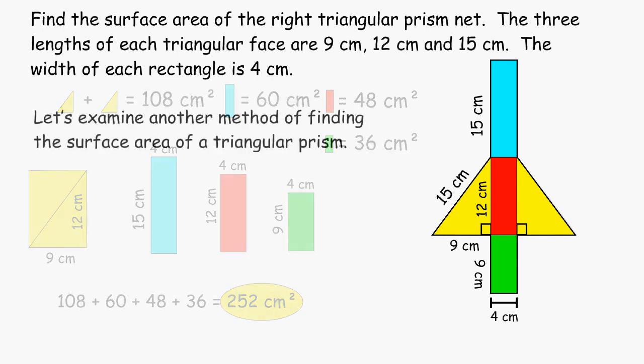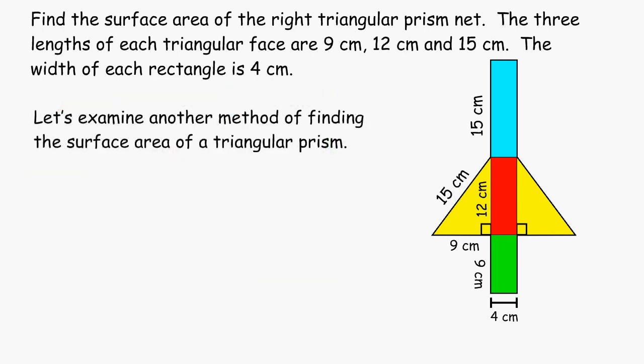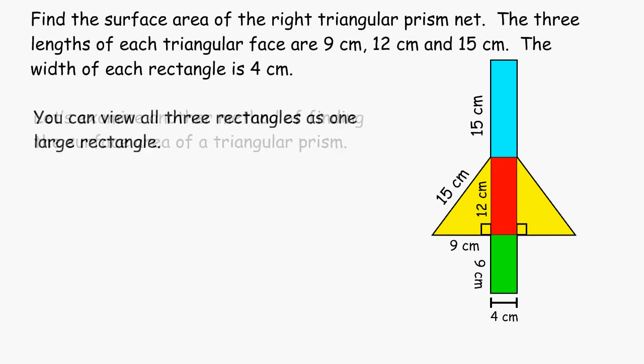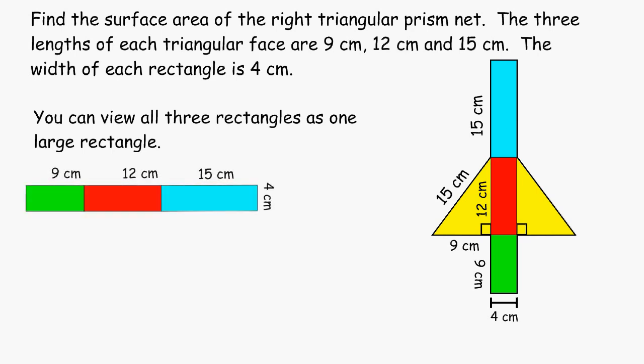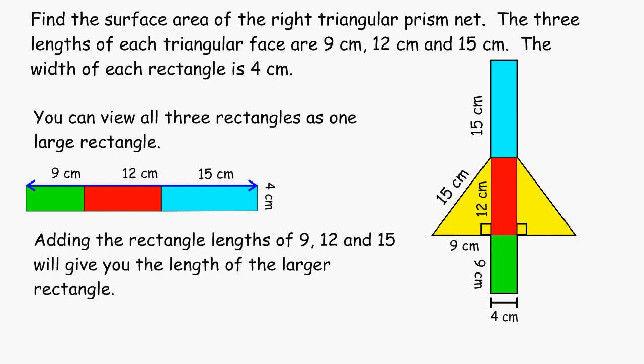Now let's try another strategy for figuring out the surface area of this triangular prism. With this strategy, we are going to view all three rectangles as one large rectangle. If we put these rectangles side by side, we can add up their different lengths to form one large length. So if we add 9, 12, and 15, that would give us a total of 36 centimeters.